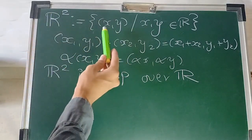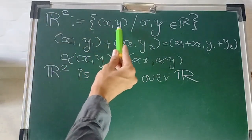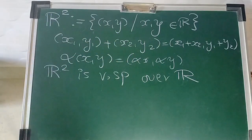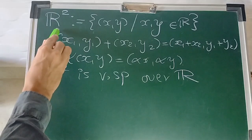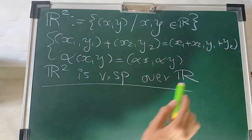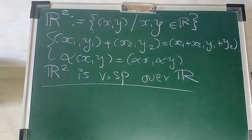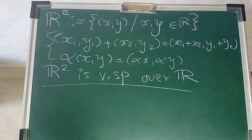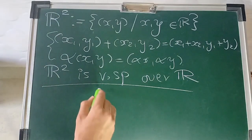R² is nothing but a set of all (x, y) where x and y are real numbers, and the operations are defined such that this set with these two operations becomes a vector space over R. In this class we will be discussing the subspace of R².